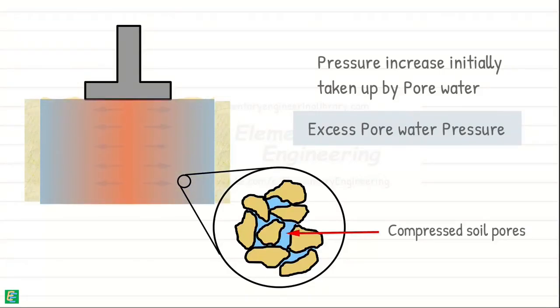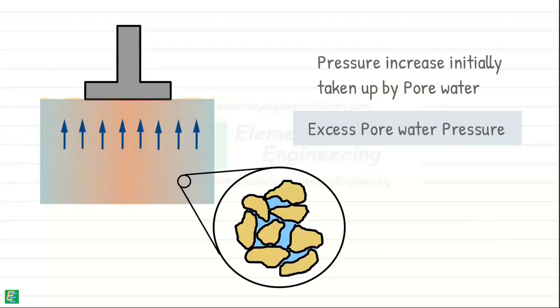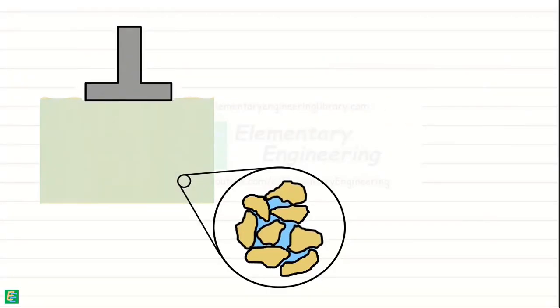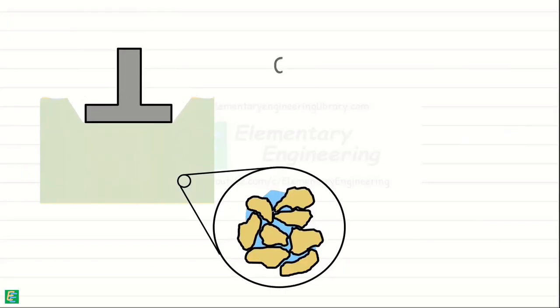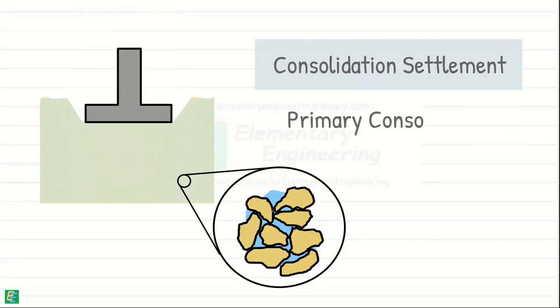This excess pressure develops a hydraulic gradient, which over time dissipates as water gradually drains out of the soil pores through lateral flow to drainage systems or upward flow to the ground surface. As water is pushed out of the soil pores, the soil particles rearrange and come closer, resulting in further settlement, which is called consolidation settlement. This is also called primary consolidation.